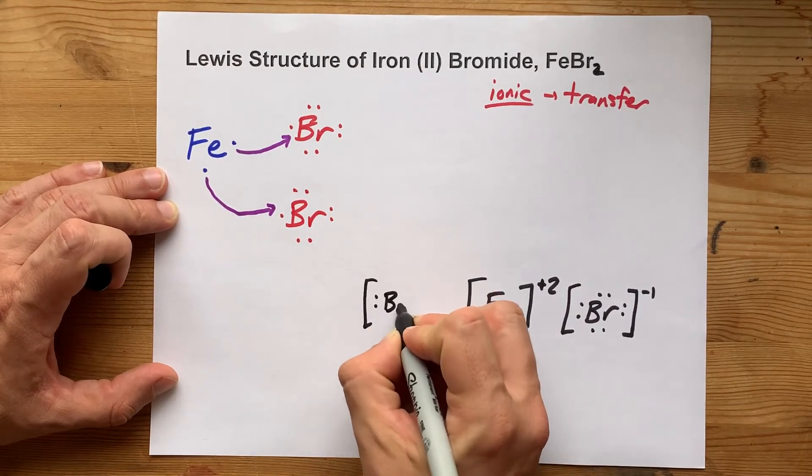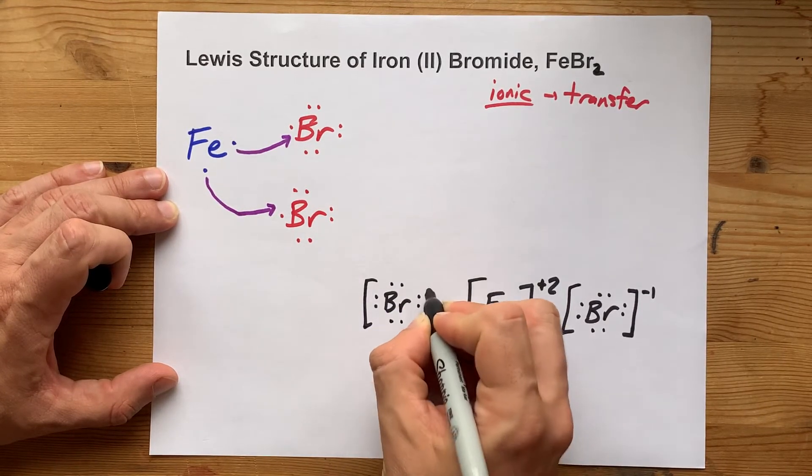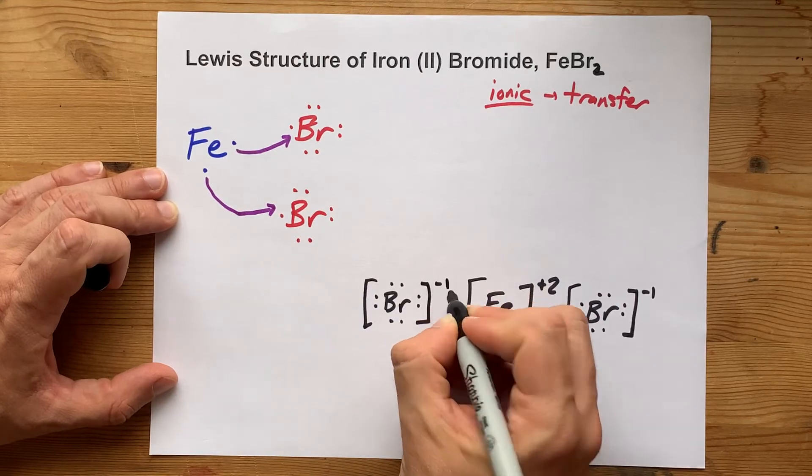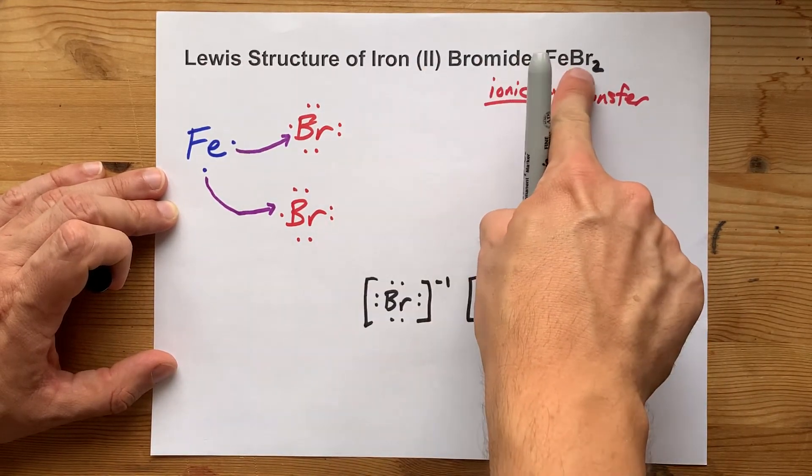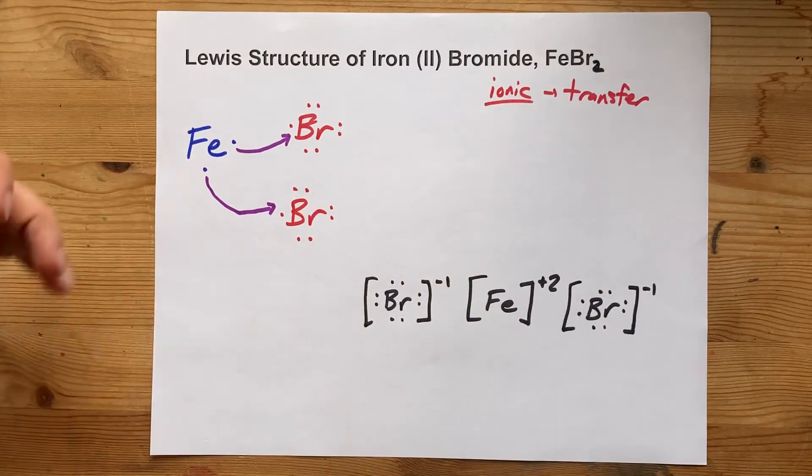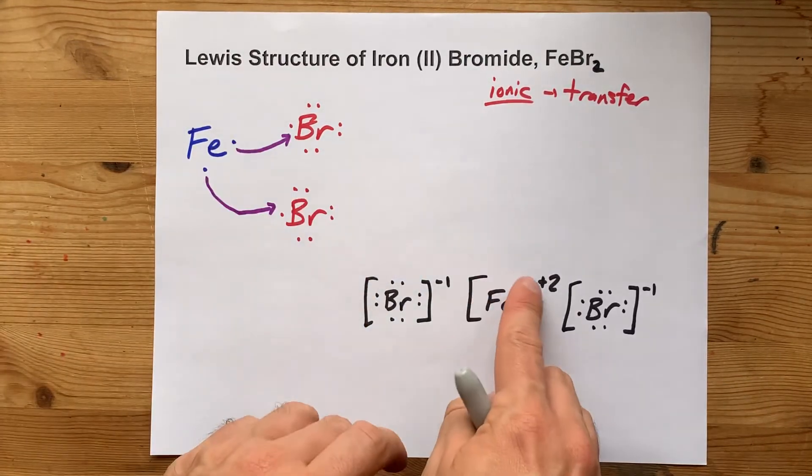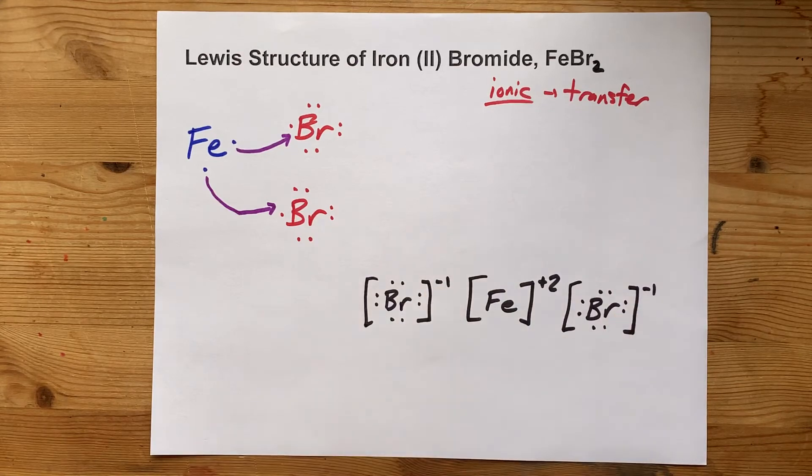And whether you like it or not, you're probably going to have to draw a second one of them, because you need two bromines to absorb the electrons from iron. See? Iron (II). FeBr2. All the clues are there, and those clues manifest themselves here as well.